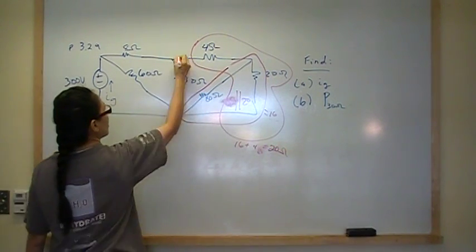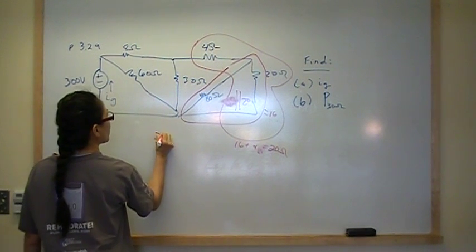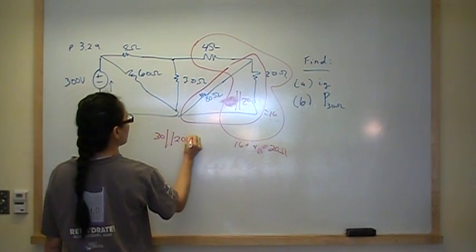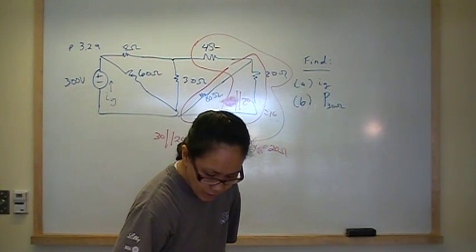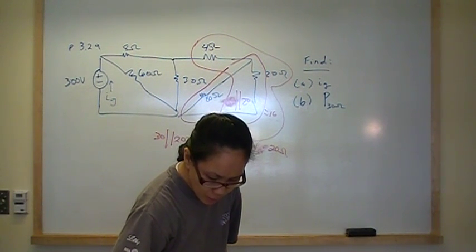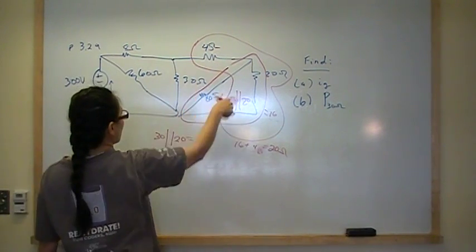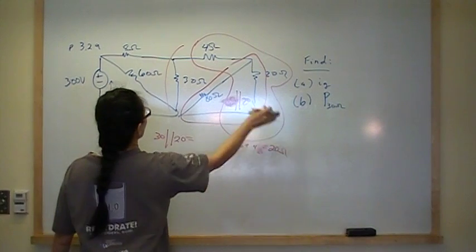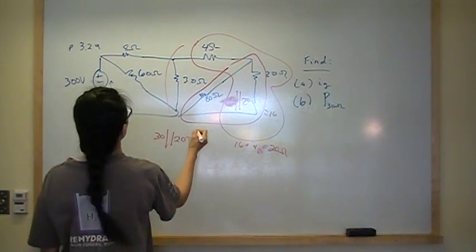So now we've got 30. This branch here is now in parallel with all of that. We've got 30 in parallel with 20. 20 is going to give you 1 divided by 30 plus 1 divided by 20, inverse that. This whole thing is worth, from here to here, is worth 12 ohms.